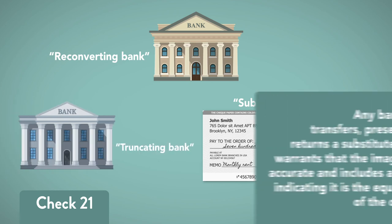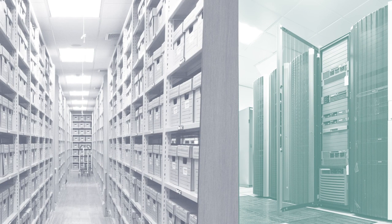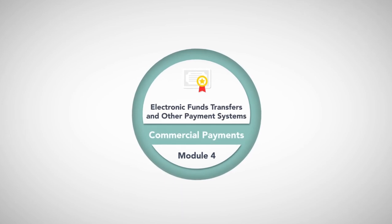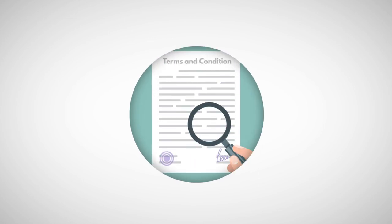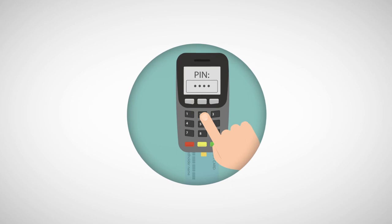Any bank that transfers, presents, or returns a substitute check warrants that the images are accurate and includes a notice indicating it is the equivalent of the original. It is noteworthy that when Check 21 took effect in 2004, most checks were paper-based transactions in the Federal Reserve System, but just a decade later over 99% of checks deposited in the Federal Reserve System were in electronic form. Our next module continues our discussion of check collection with a more detailed look at warranties, the bank-customer agreement, loss allocation, electronic funds transfer, and debit and credit cards.